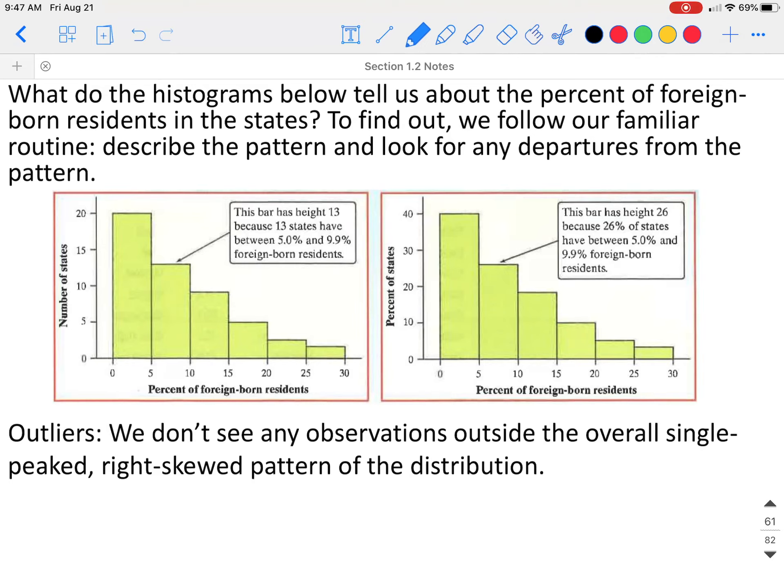If we're looking for any outliers, there are no gaps in our histogram, so we don't see any observations outside the normal pattern. So it does not appear that there are any outliers.